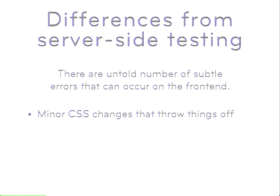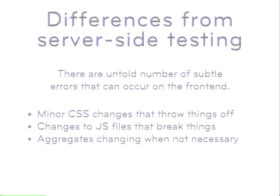There are minor CSS changes that throw the layout off. Changes to JavaScript files that, during the build step, get broken just because you forgot a semicolon at the end of one file. Or maybe your aggregates are changing when they shouldn't be — have you ever looked at the Drupal aggregates? There's that one little C-tools aggregate that drives me nuts. It should just be piled in with everything else. Sometimes you want to monitor if those things are creeping back into your site.